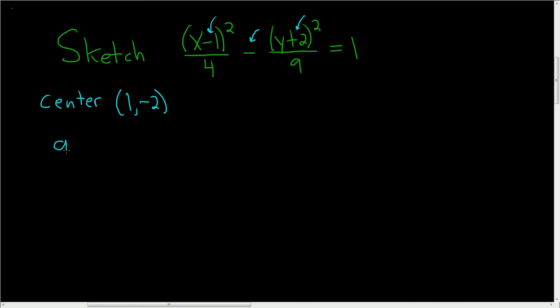To find A for a hyperbola, you just take the square root of whatever number is here, so the square root of 4, which is 2. And to find B, you simply take the square root of whatever number is here, always, every single time. So square root of 9 is equal to 3.